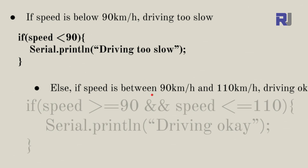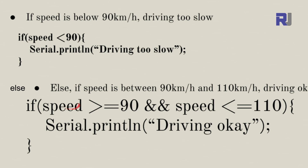In the programming language we write: if speed is greater than or equal to 90 AND speed is less than or equal to 110. The greater-than-or-equal sign means 90 is included; less-than-or-equal means 110 is included. So this is the inclusive range 90 to 110. If both conditions are true, we take the action — 'driving okay.'